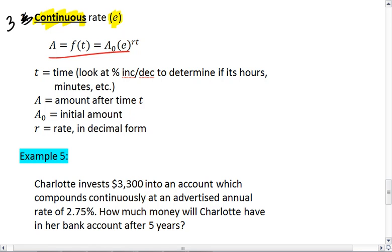T is our input—it's the time that's passed. The increment of time does get based on what r represents. A, which is our output, is the amount we have after a time t. A₀ or A sub 0 is the initial amount, and r is your rate in decimal form.